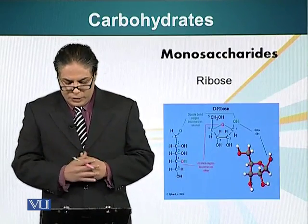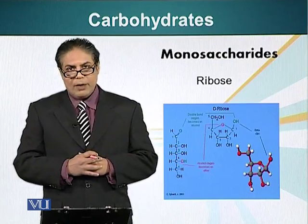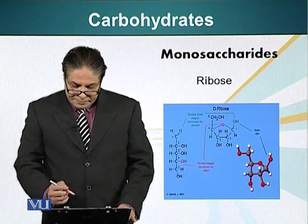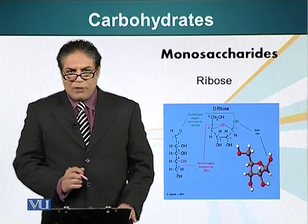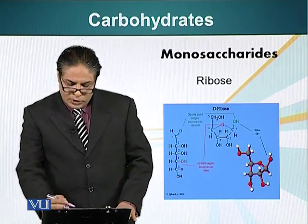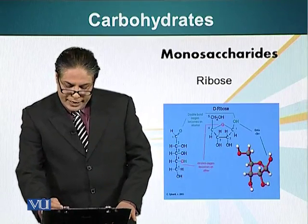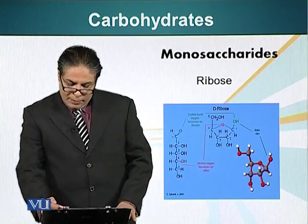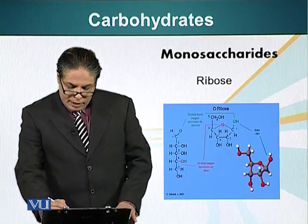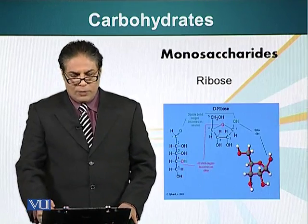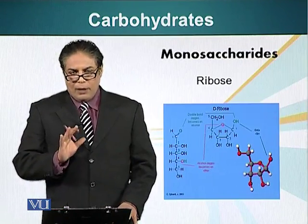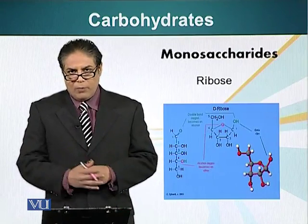One of the monosaccharides I would like to talk about — and we will discuss in significant detail when we talk about DNA or ribonucleic acids — is that this molecule has five carbon atoms. You can see they have been numbered one, two, three, four, and five. When this molecule circularizes, please pay attention to the arrangement and position of these carbon atoms. There is carbon number one with a hydroxyl group, carbon number two with a hydroxyl group, carbon three has a hydroxyl group, and carbon number five has a hydroxyl group. Carbon atoms number two, three, and five are very important in this molecule when we start talking about the DNA polymer.